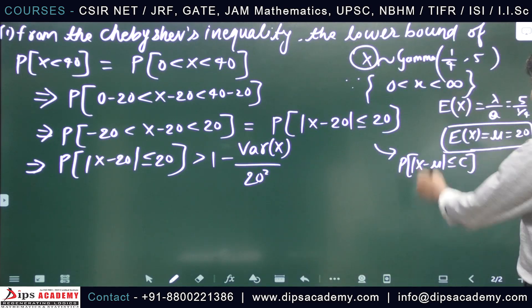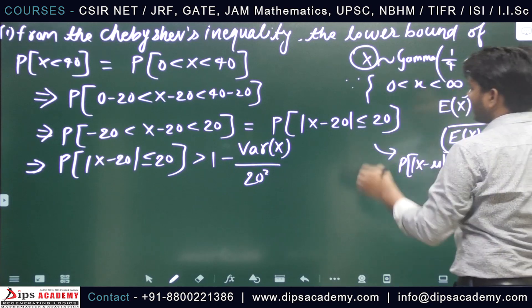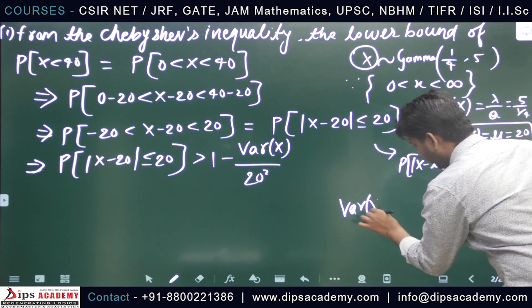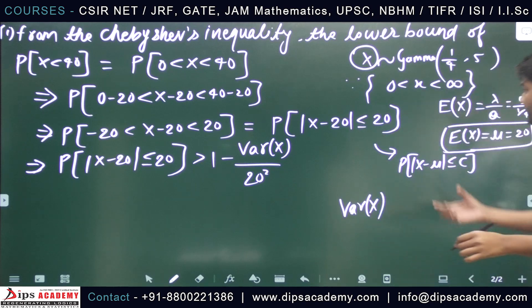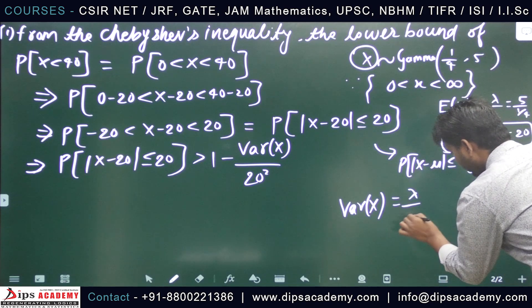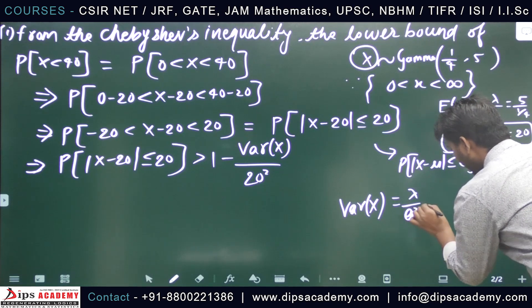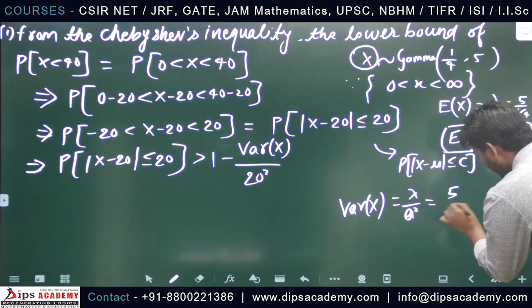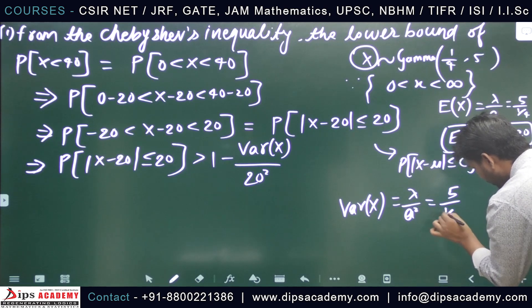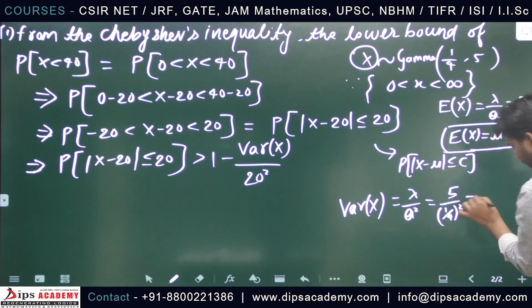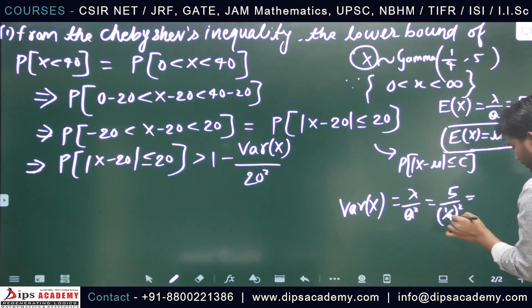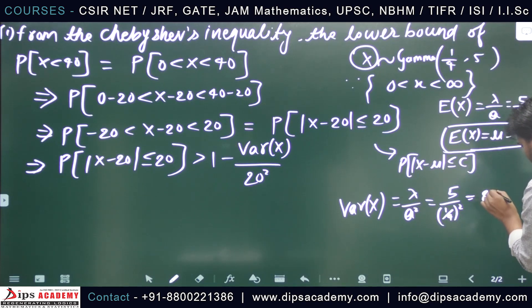We now need to find Var(x). For the Gamma distribution, Var(x) = λ/a². With λ = 5 and a = 1/4, we get Var(x) = 5/(1/4)² = 5/（1/16) = 80.